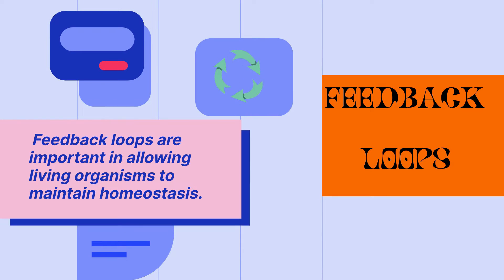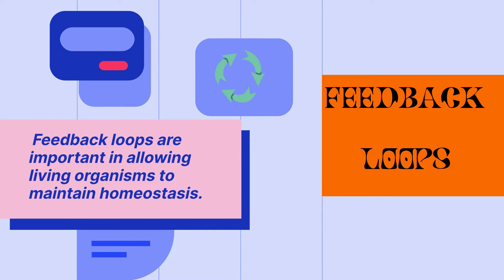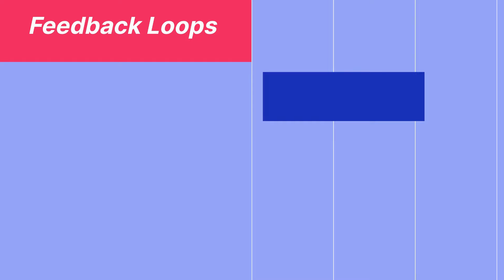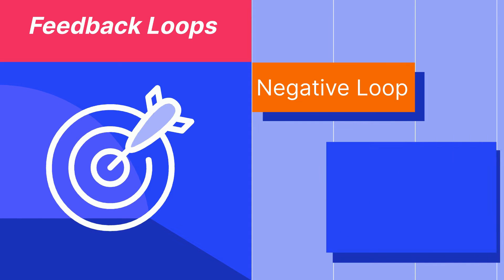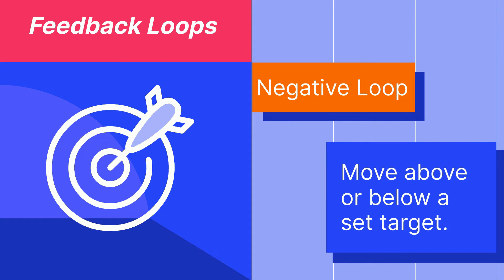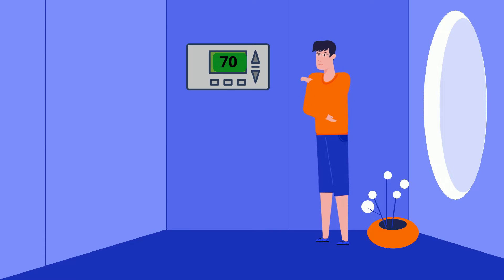Feedback loops are important in allowing living organisms to maintain homeostasis. With a negative feedback loop, you move above or below a set target. An example is found at your house with your thermostat.